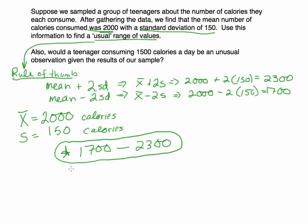If you look at 1,500, 1,500 would be to the left of 1,700. So 1,500 calories is not in this range. It's not in the range. So would this be an unusual observation? We would say yes. Because this observation does not fall within two standard deviations of the mean, of the sample mean, 1,500 calories a day would be an unusual observation.